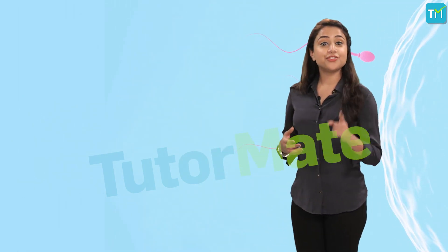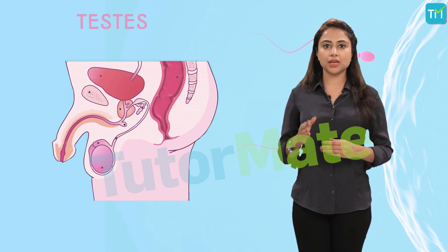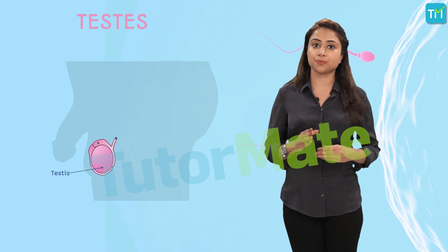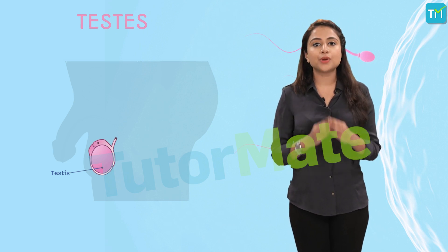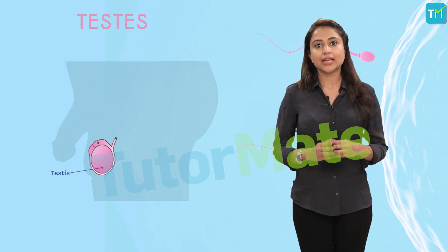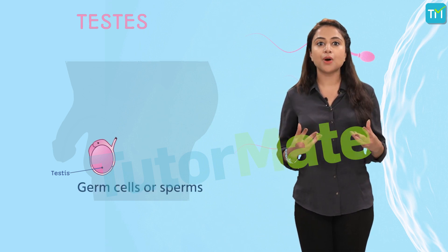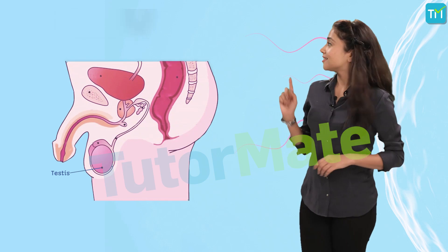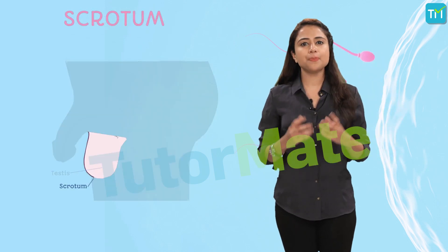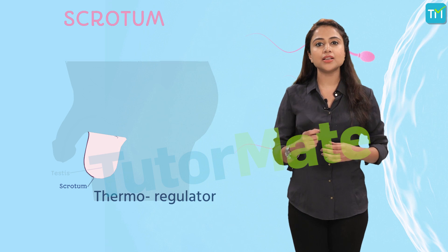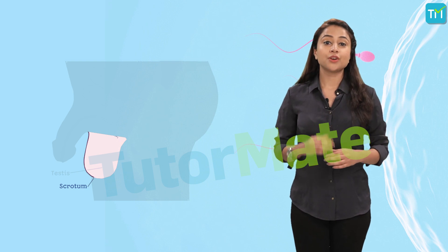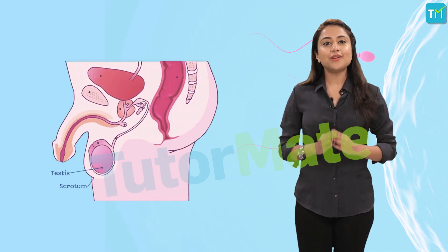The human male possesses two oval-shaped testes located outside the abdominal cavity in the scrotum. Testes are the primary reproductive organs in a man. Their functions are to form germ cells or sperms, as well as to produce the male sex hormone called testosterone. The scrotum is a pouch of skin that acts as a thermoregulator, providing an optimal temperature — generally 1 to 3 degrees lower than body temperature — for the formation of sperms.